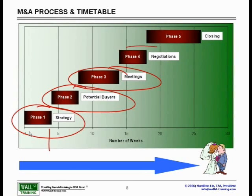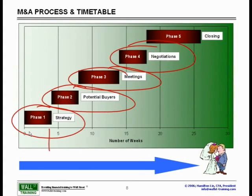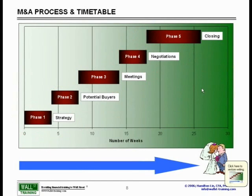The negotiation aspect might actually be considered the quickest, assuming the buyer and seller both know what they want and are able to come to terms fairly quickly. The closing portion, once the lawyers are involved, usually takes the longest, as you have to put into paper exactly what the two parties have agreed upon. Let's go into a little bit more detail on each of these.